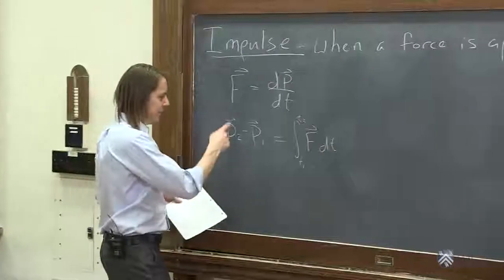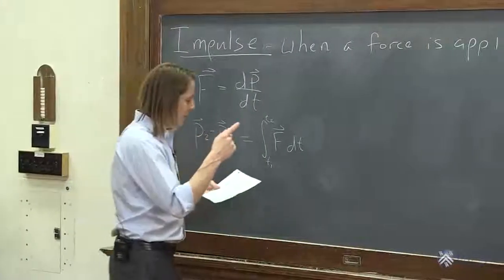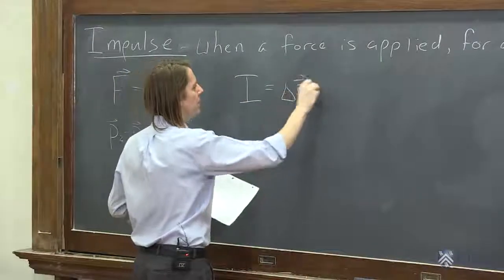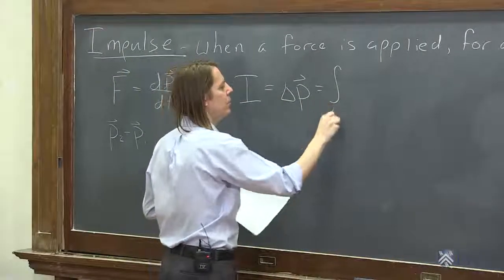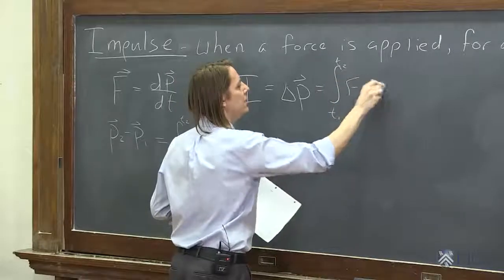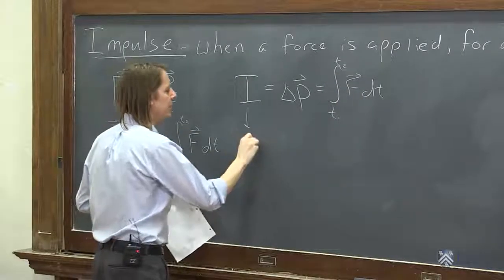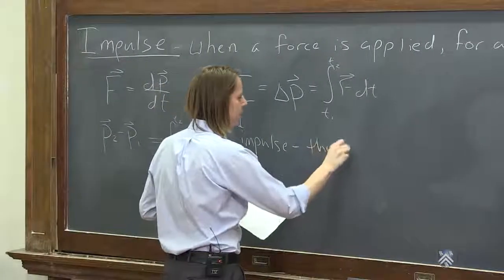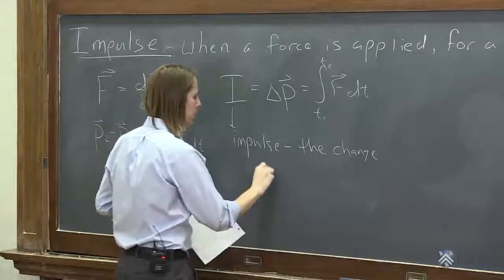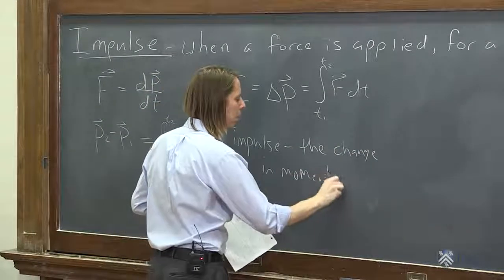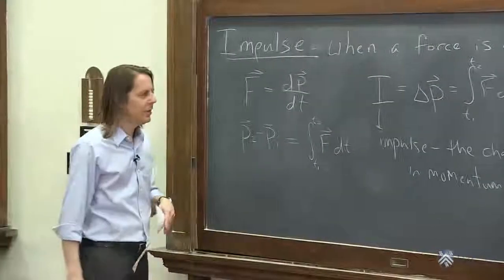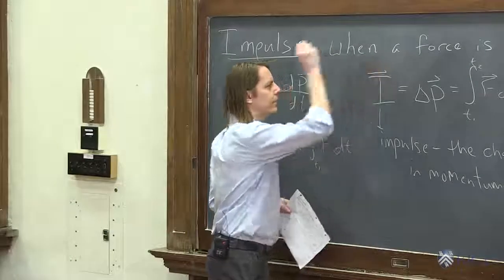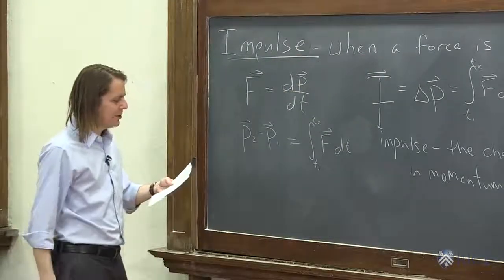So what we could also call this is just delta P. The impulse I is equal to delta P, and it equals the integral from T1 to T2 of F dt. This is the impulse — it is the change of momentum. It has units of kilograms meters per second, and it is a vector.